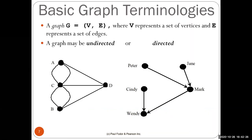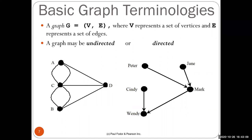A graph G is a tuple V and E, where V represents the set of vertices — in our case {A, B, C, D} — and E represents the set of edges, represented as pairs of connected vertices. Note that E is not strictly a set if you have parallel edges, since the same edge would appear twice in the collection.